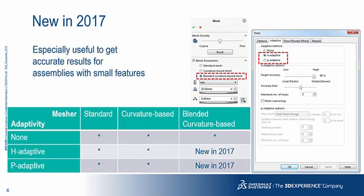Up until today, you could use the H and P adaptive methods with both the standard and curvature mesher, but not with the blended curvature mesher. This functionality gap has been addressed in 2017.